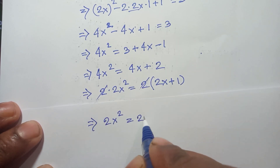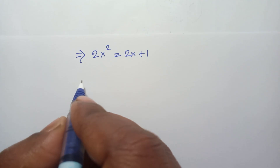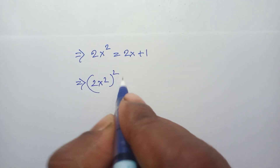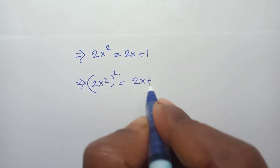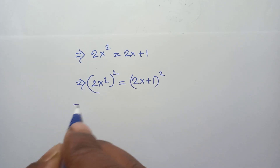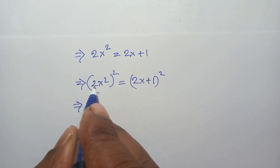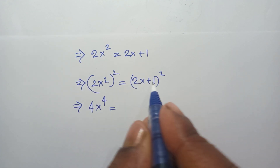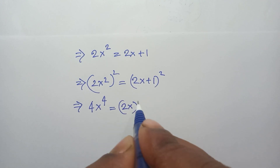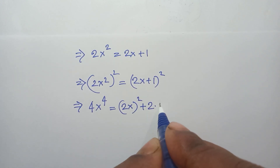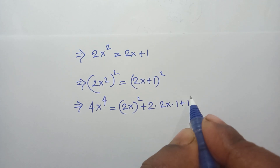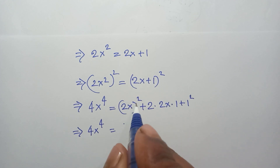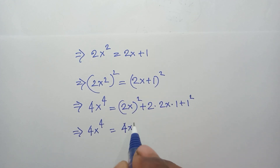Now squaring both sides of 2x² = 2x + 1: (2x²)² = (2x + 1)². The left side gives 4x⁴. The right side expands using (a + b)² as (2x)² + 2·(2x)·1 + 1² = 4x² + 4x + 1.